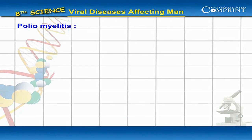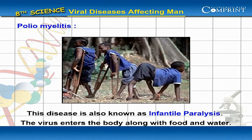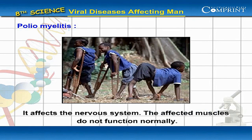Poliomyelitis: This disease is also known as infantile paralysis. The virus enters the body along with food and water. It affects the nervous system. The affected muscles do not function normally.